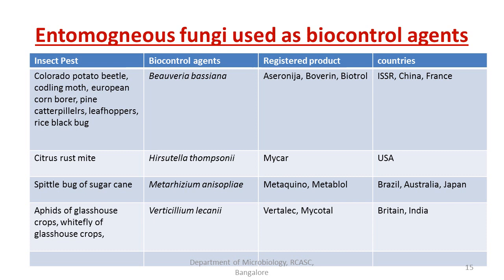These are some examples of entomogenous fungi used as biocontrol agents. The table represents the insect pests targeted by each biocontrol agent — the dominant ones being Beauveria bassiana, Hirsutella, Metarhizium species, and Verticillium species — along with registered products that have been extensively produced in India, Britain, USA, China, France, Japan, and other countries.